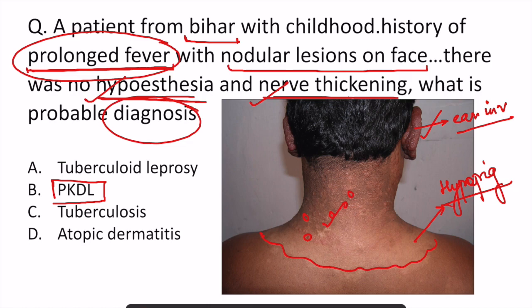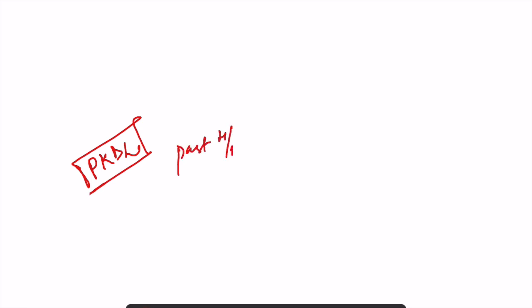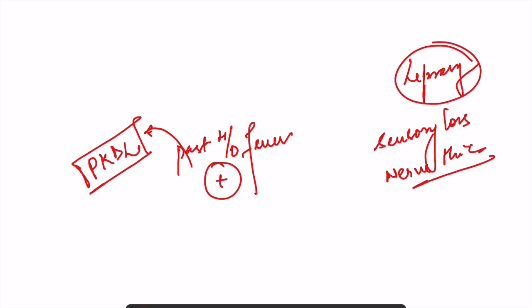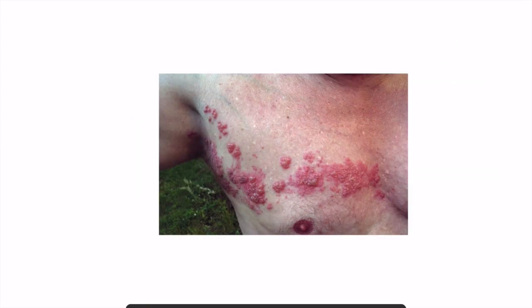The past history of prolonged fever indicates the patient initially developed kala-azar, which presents with prolonged fever in childhood, and later developed post-kala-azar dermal leishmaniasis. Remember, PKDL can appear very much like leprosy. To differentiate: if past history of fever is present, the examiner is likely referring to PKDL; if absent and sensory loss plus nerve thickening are present, the examiner is talking about leprosy.